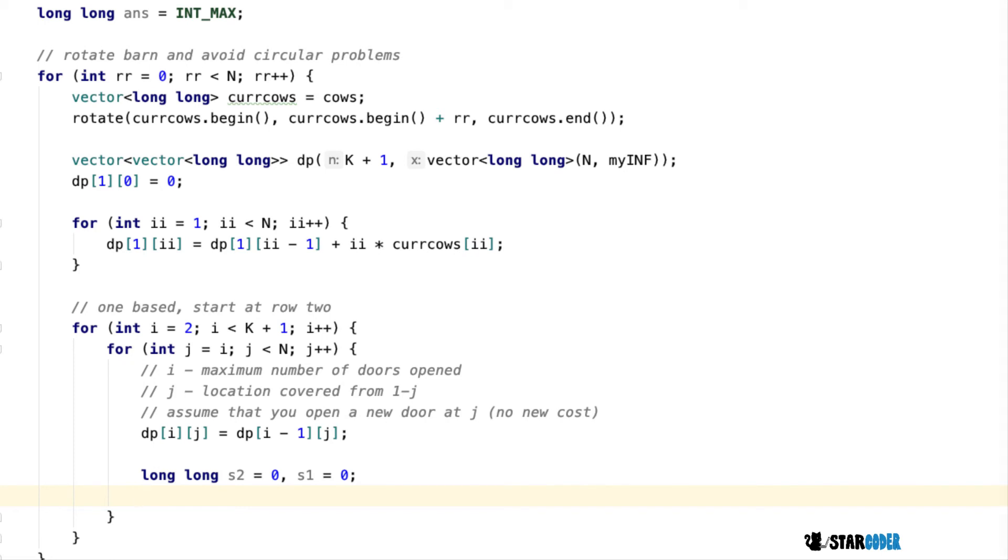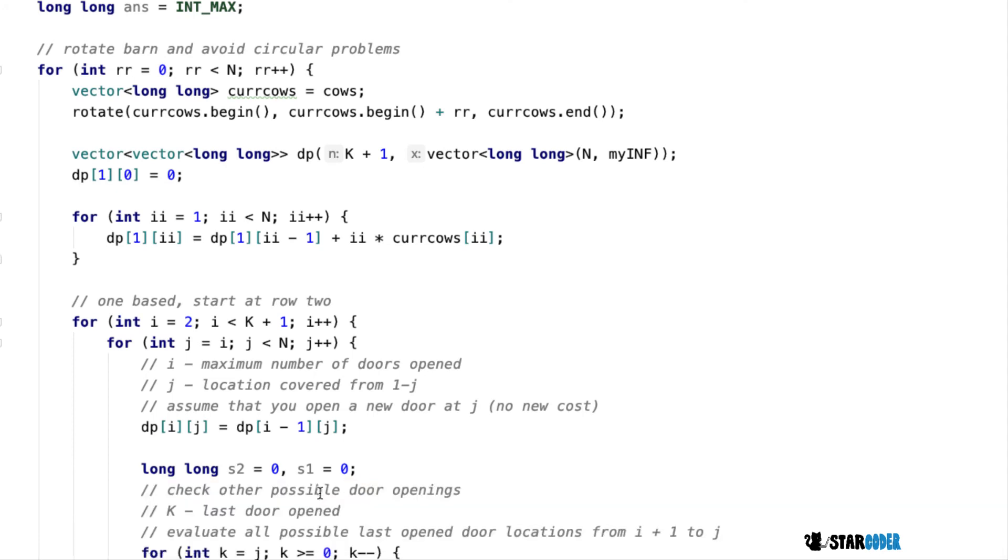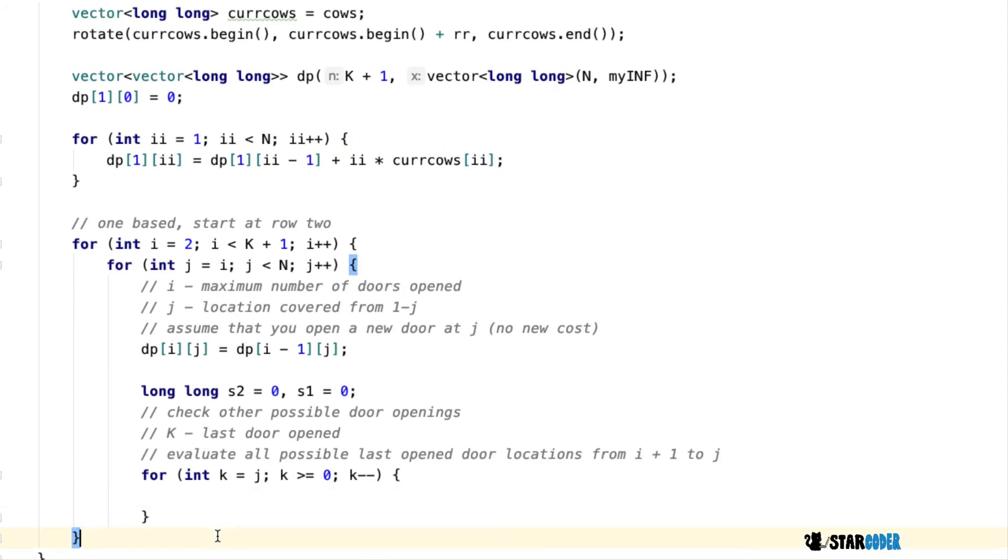We loop through the section from j and check the different possible door openings.